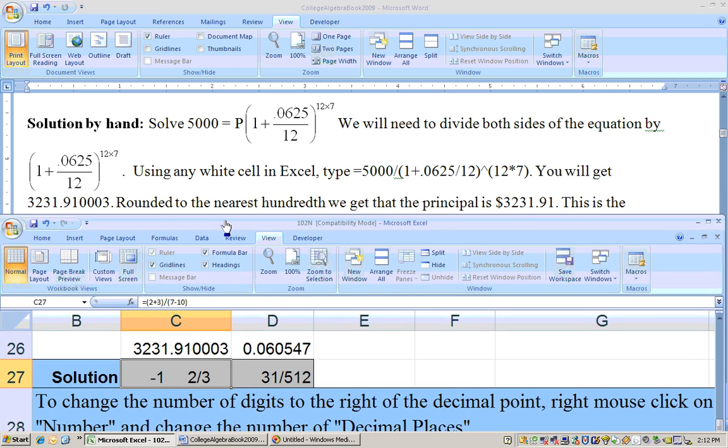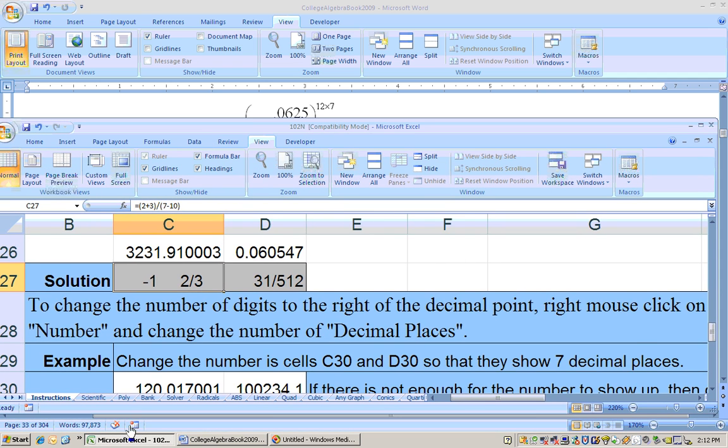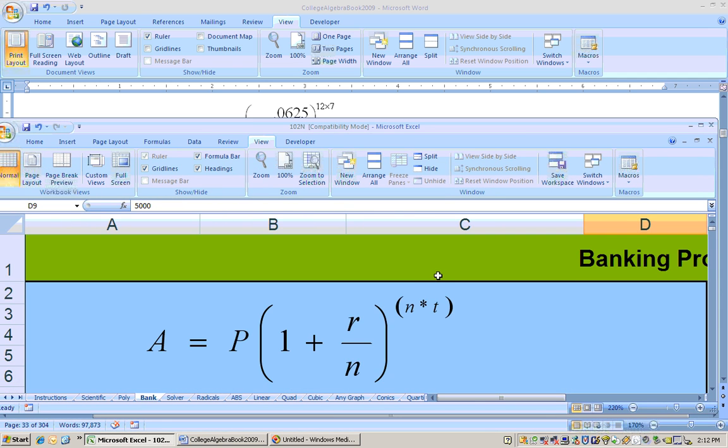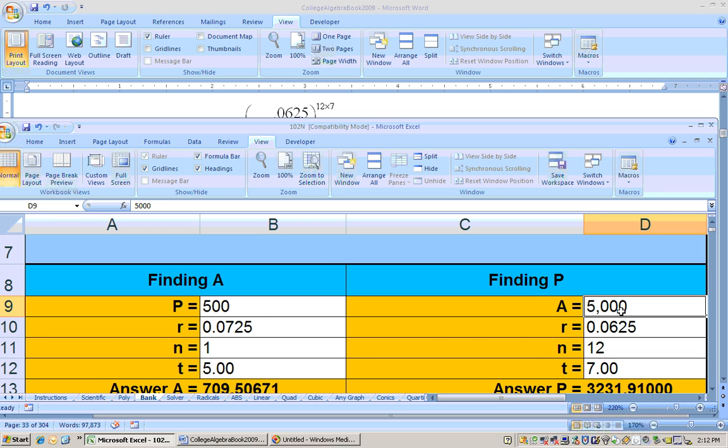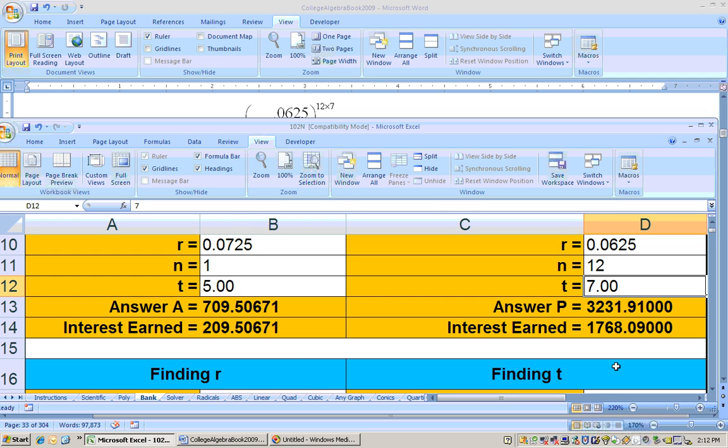So we can do these on a calculator or an Excel, but the Excel sheet, we have this banking sheet. Okay, so we can do this right over here where we're finding the principal. So finding the principal, the amount that we need to end up with is 5,000. I type that in. Here's your interest rate of 0.0625. The N was 12, compounded monthly, and in seven years we want to end up with that $5,000. So how much would we have to invest? Right here, $3,231.91.